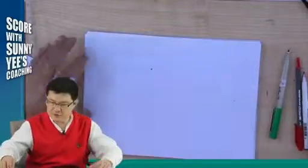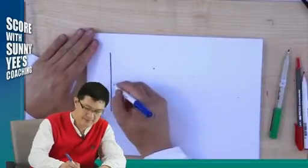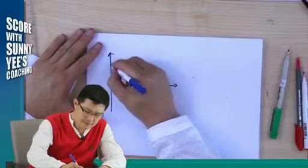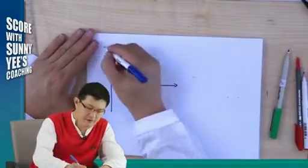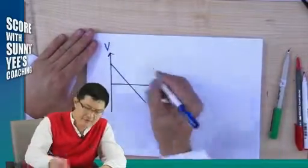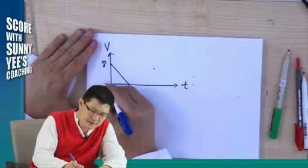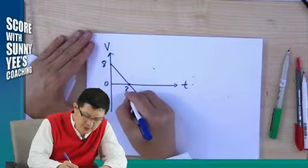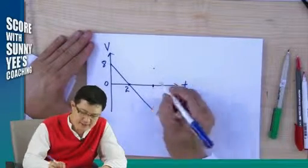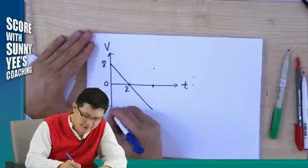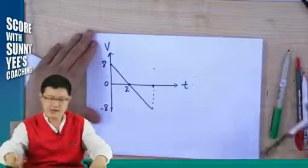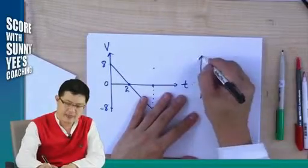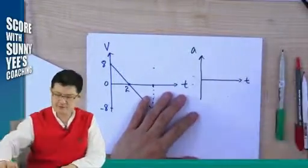Now, if I give you like this, going down like this, velocity time from 8, 0, this is, say, 2 second, and this is, again, negative 8. I want you to sketch the acceleration time graph. Acceleration time graph. Now, look carefully.